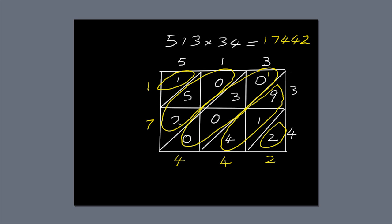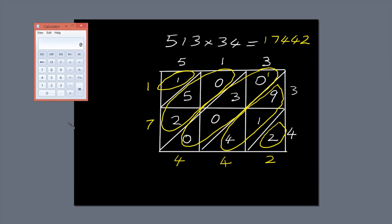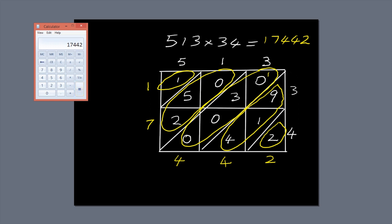I'm going to check the answer on my calculator. But I'm allowed to do that because I'm not on board a UFO. 513 times 34 equals 17,442. So the answer's correct.